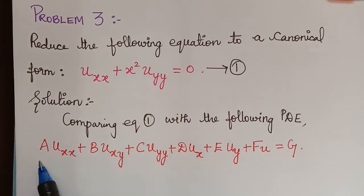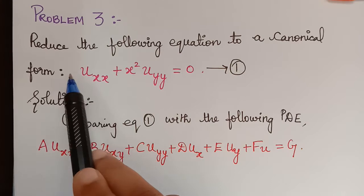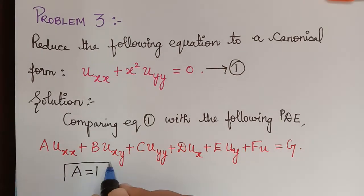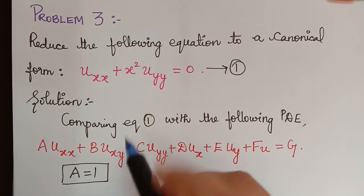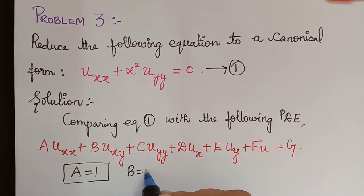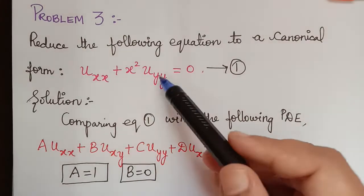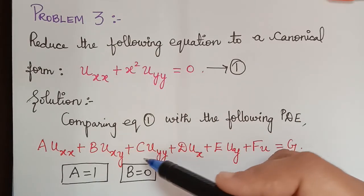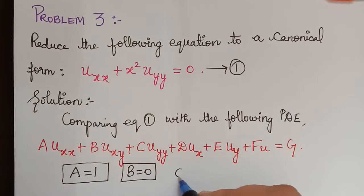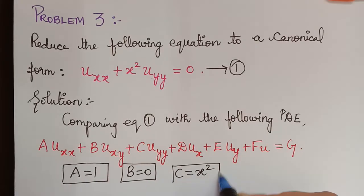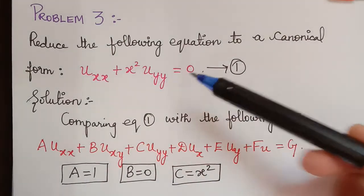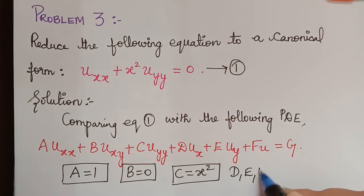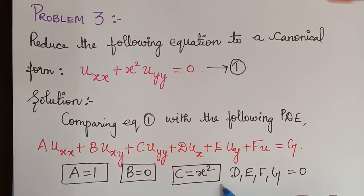The coefficient of uxx is capital A, and here A is equal to 1. We do not have the term uxy, so B is equal to 0. We have uyy whose coefficient is x squared, so C is equal to x squared. We do not have the terms ux, uy, and u, so D, E, F, and G are all equal to 0.